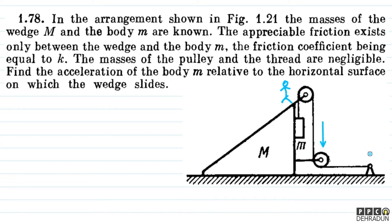To bachon, jab main is wedge ke nazariye se baat karoonga, to mere nazariye me block kitna neeche jara hai with respect to motion of the wedge — maal lete hain ki yeh jo wedge-attached pulley hai, yeh maan lijiye ki x distance towards the right move kar raha hai. Iske aage move karne se kya hua ki x length rassi jo hai, yeh haan par jo already use me thi, woh ab khali ho gayi. Saath hi saath yeh wali jo length hai, ismein toh koi bhi change nahi gaya — toh yeh haan se jo x length khali ho gayi hai, woh block ko milegi neeche jane ke liye.